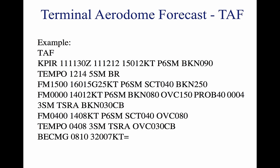A TAF is a report established for the 5 statute mile radius around an airport. TAF reports are usually given for larger airports. Each TAF is valid for a 30-hour time period and is updated four times a day at 0000, 0600, 1200, and 1800 Zulu. The TAF utilizes the same descriptors and abbreviations as used in the METAR report.